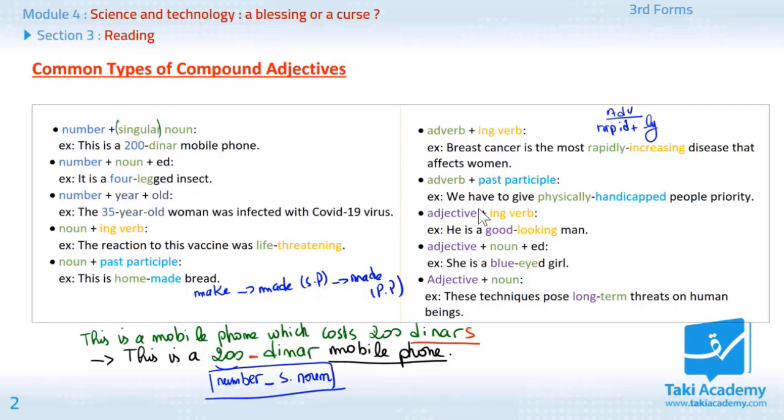Next one. Adverb plus past participle. Example. We have to give physically handicapped people priority. So, people who have physical handicaps. Physical is the adjective plus ly. This is the adverb. Physically. Handicapped is the past participle of handicap.